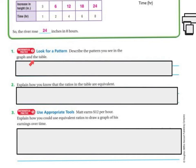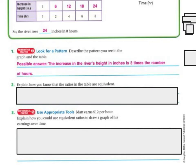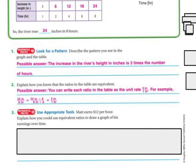Describe the pattern in the table: the increase in the river's height in inches is 3 times the number of hours — for every 1 hour, I add 3 inches. So 2 hours gives 6, and a hypothetical 5 hours would give 15. The ratios are equivalent because you can write each as the unit rate of 3 inches per 1 hour. For example, 24 and 8 divided by 8 gives 3 per 1 hour, which is simplifying the fraction.